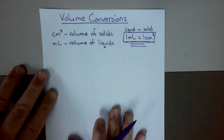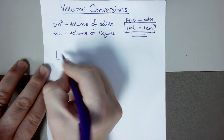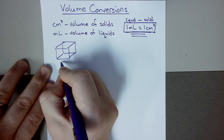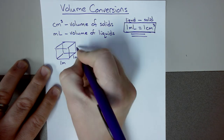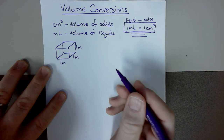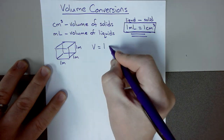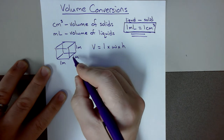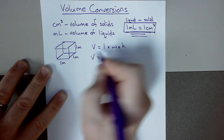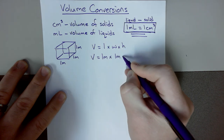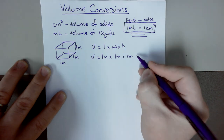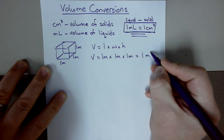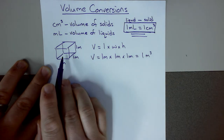Now let's look at a cube. If I take a cube where each side is one meter, that's a measurement of distance for each side. We know that volume equals length times width times height. So the volume of this cube is one meter times one meter times one meter, which equals one cubic meter.